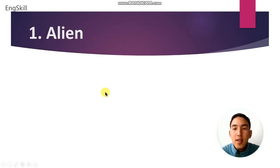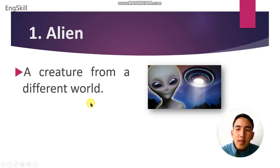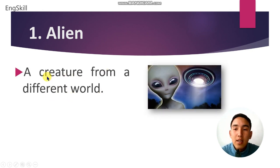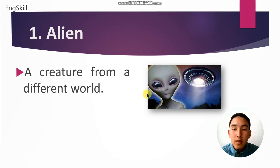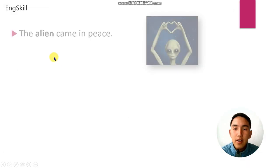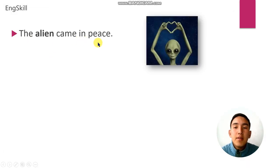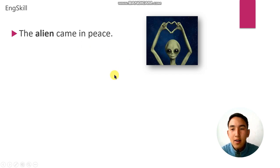The first word is alien. Alien means a creature from a different world. For example: the alien came in peace.